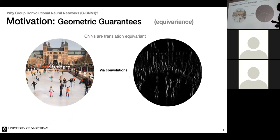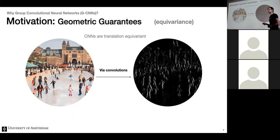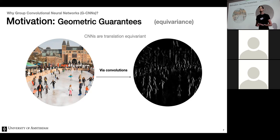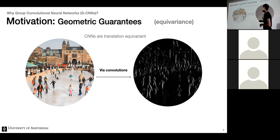We already know that convolutional networks are translation equivariant, meaning if the input translates, the output translates accordingly. This is important for two reasons: first, all information stays within the network even if the image is shifted; and second, this equivariance property is precisely the underlying mechanism that makes CNNs so successful in computer vision, enabling weight sharing across locations.